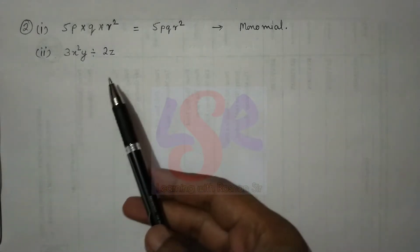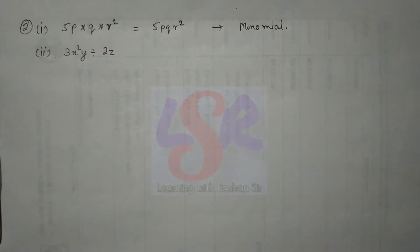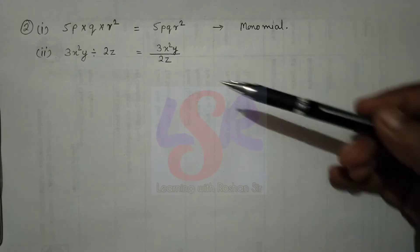In question 2, we have to identify whether each expression is a monomial, binomial, or trinomial. For the first expression, on multiplication we get 5pqr², which is only one term — therefore it is a monomial. In the second part, there is a division sign, and on solving we get 3x²y upon 2z, which is again a monomial.